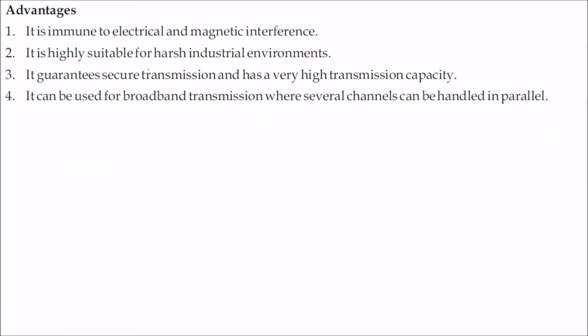The advantages of optical fiber are that it is very immune to electrical and magnetic interference, making it very suitable for harsh industrial environments. It guarantees secure transmission at very high transmission capacity and can be used for broadband transmission where several channels can be handled in parallel.